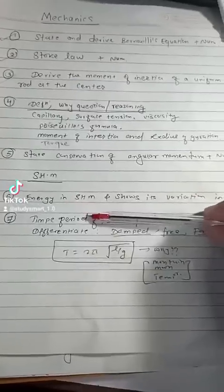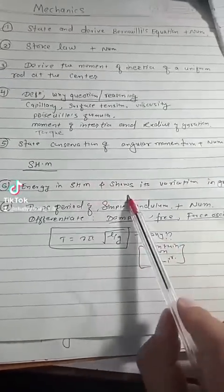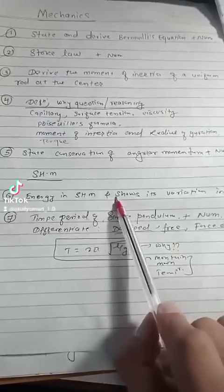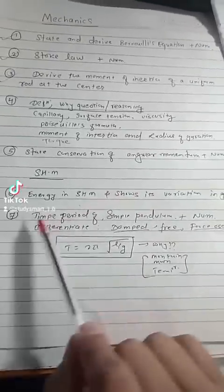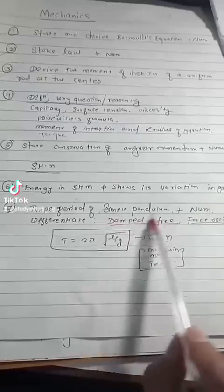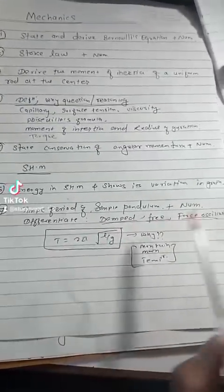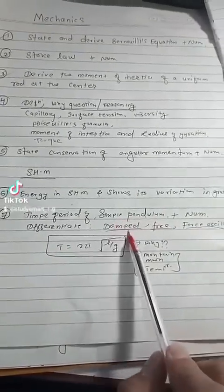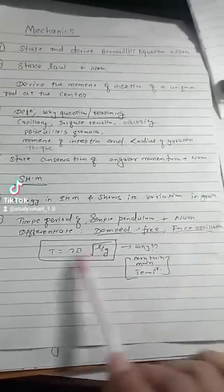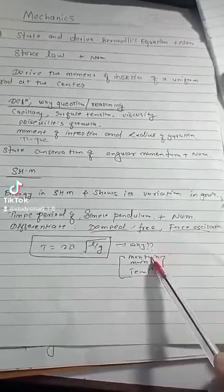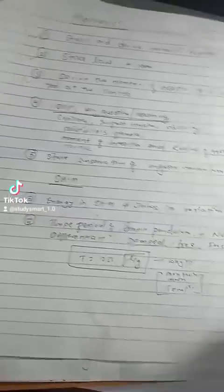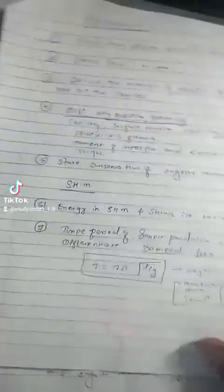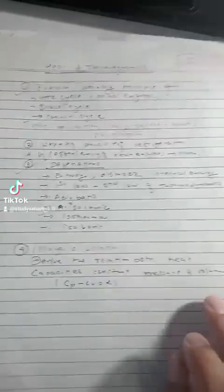Moving on, simple harmonic motion is important. The energy in simple harmonic motion, variation shown in graph, the equation, and the time period of a simple pendulum — these are all expected. The simple pendulum, forced oscillations — we need to find the time period. Mechanics has a lot of questions we have to cover, so we have to move on.